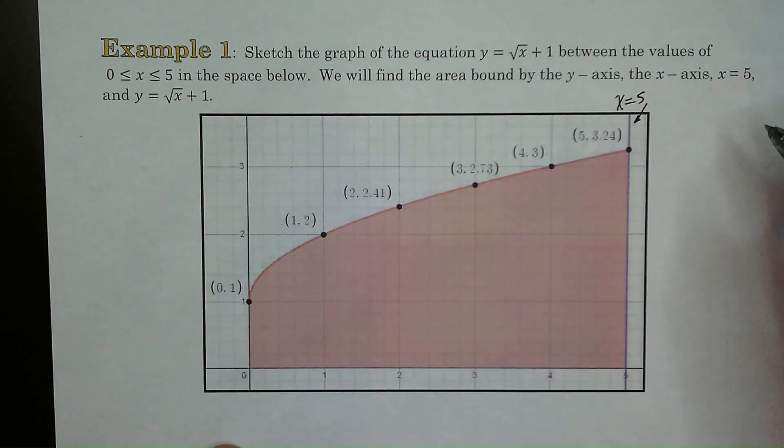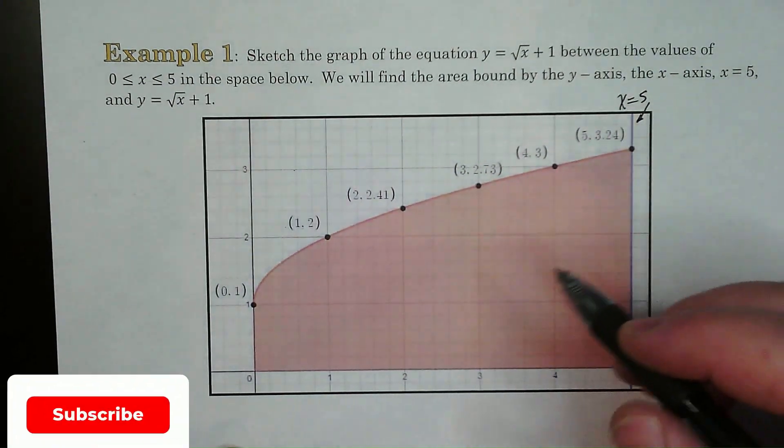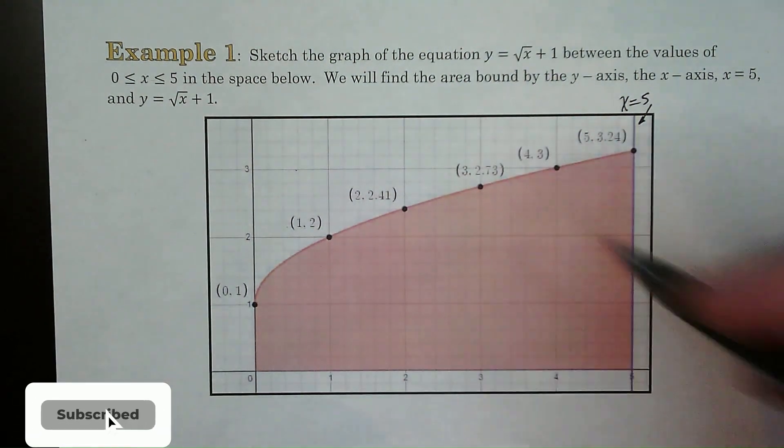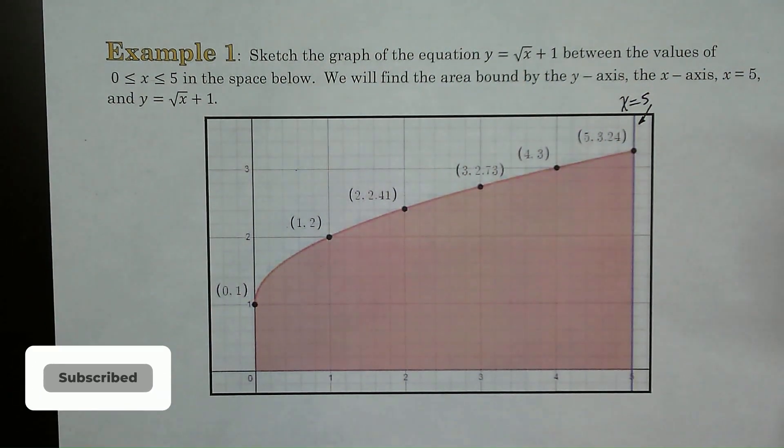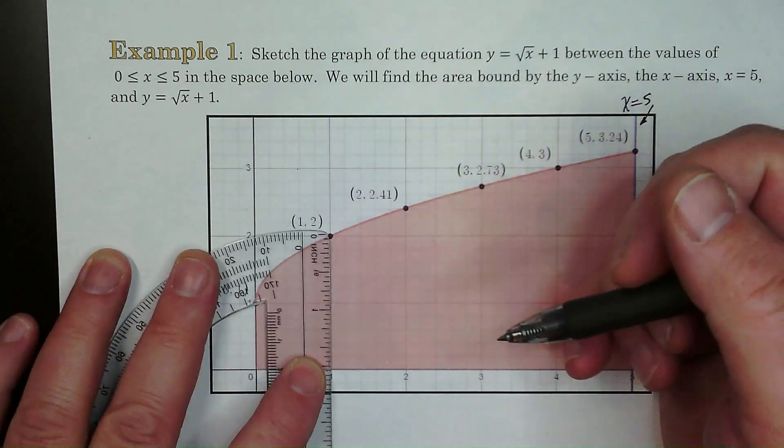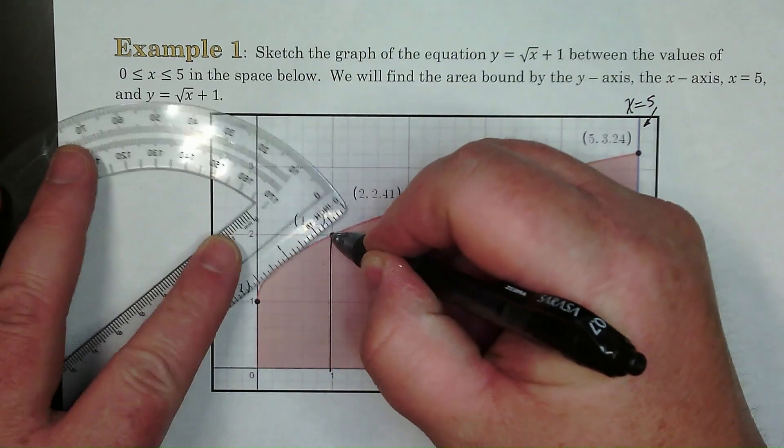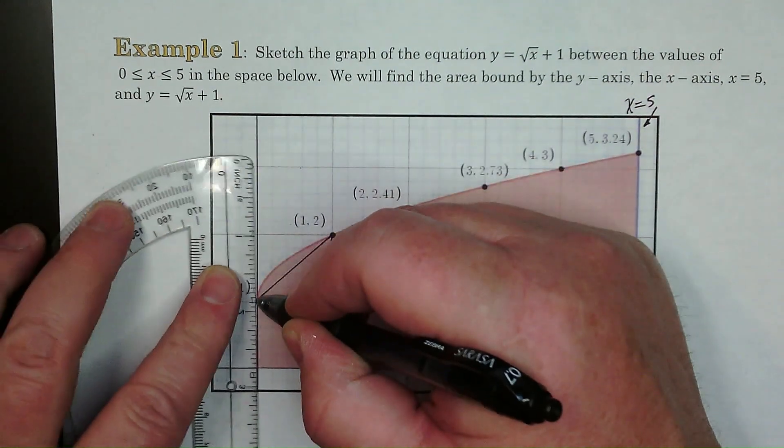We're going to use this thing called the trapezoid rule and what we're going to be doing is basically making trapezoids underneath here to find the area of each of the trapezoids and add it up and get an approximation. So our trapezoids are going to look like this. We're going to break this area here into five equal spots.